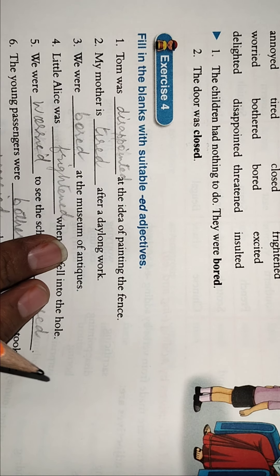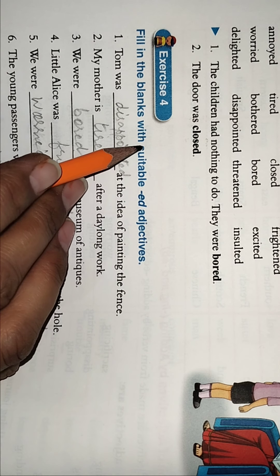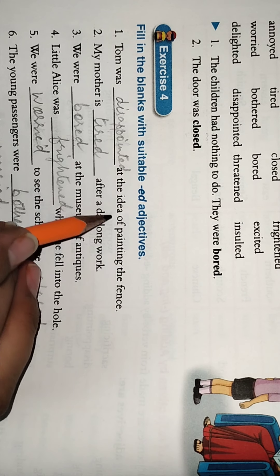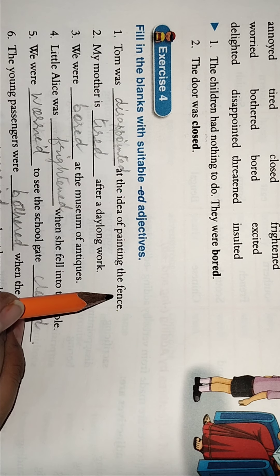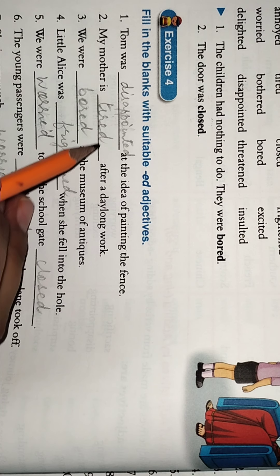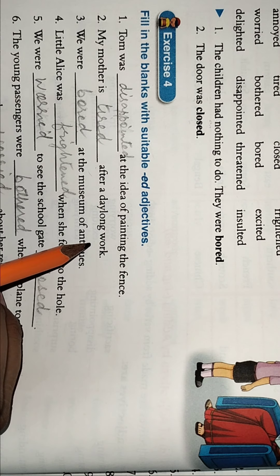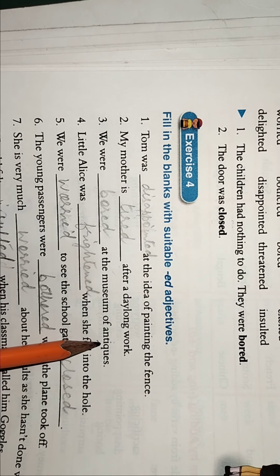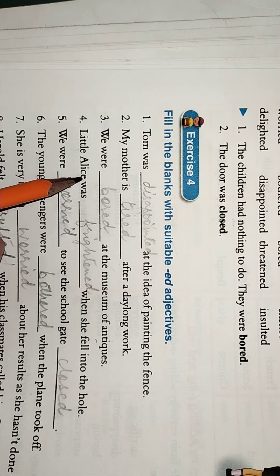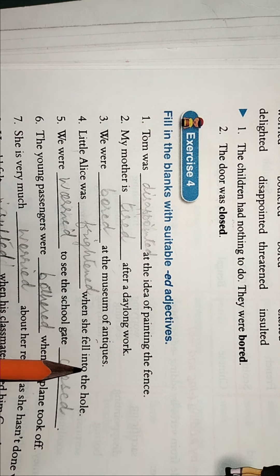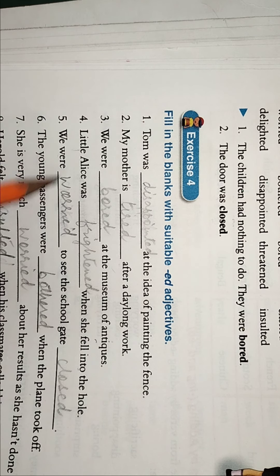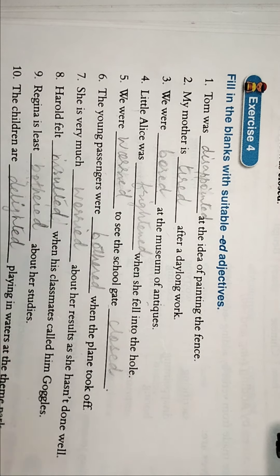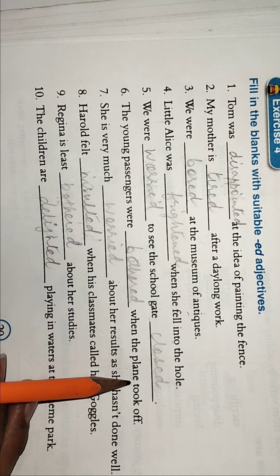Like the children had nothing to do, they were bored. The door was closed, like this. So it is very easy to form the adjectives, you can just see here. So first of all we will finish this, then we will talk about that. Come on, let's finish this exercise number four. Tom was disappointed at the idea of painting the fence. My mother is tired after a day long work. We were bored at the museum of antiques.